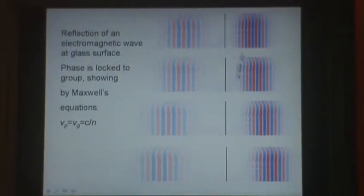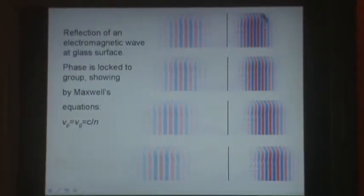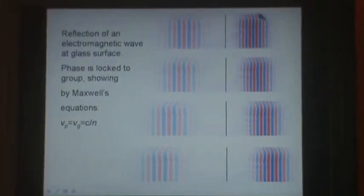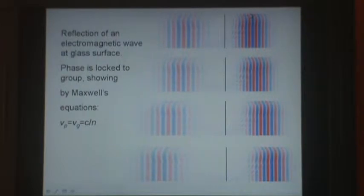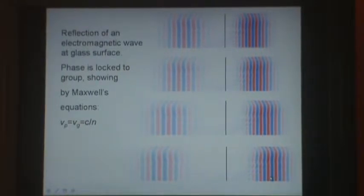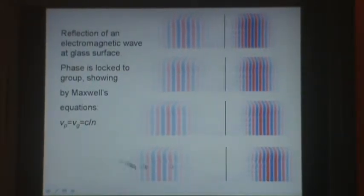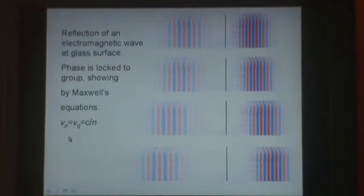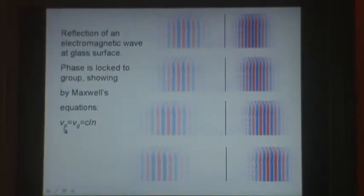But notice a very special feature, which is the carrier wave stays in phase with the peak of the wave group through time. We've analysed more than four pulses and found that is always the case. So we conclude that in light in a refractive medium, the phase velocity equals the group velocity equals c over n. This is a special case.